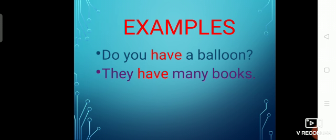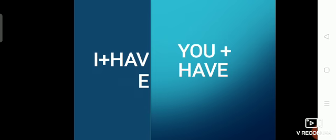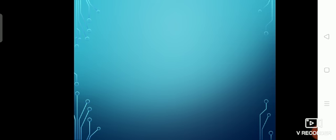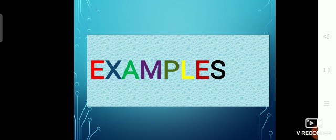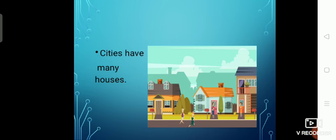Here we have a few examples. Do you have a balloon? They have many books. We use have with you as well — we consider you a plural pronoun. They is again a plural pronoun, that's why we use have. We have a big farmhouse. We also use I and you with have. I have a cat. You can see a girl in the picture — here, you have a cute puppy. Cities have many houses — cities refers to more than one, that's why we use have here.